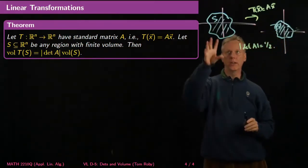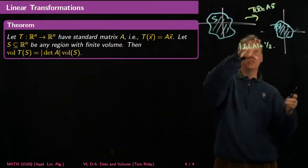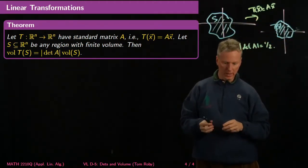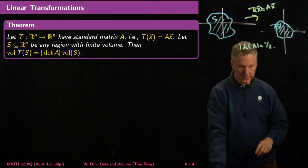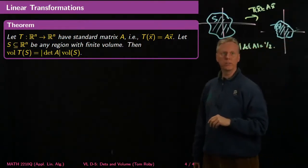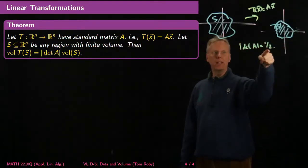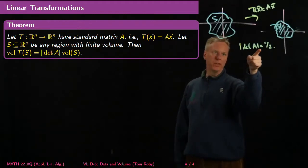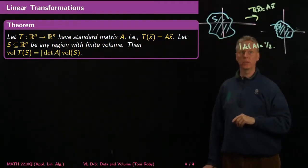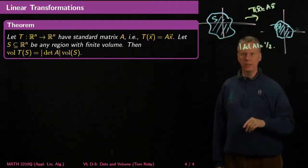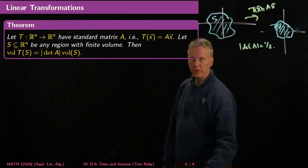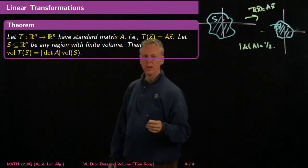On the other hand, if the determinant of A is 2, it would make the area twice as big. And if the determinant of A is negative one-half, the absolute value of the determinant is still one-half. So that's the vague idea of what's going on, and let's see a few examples.